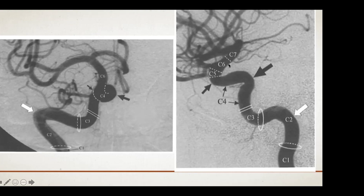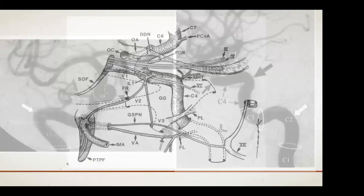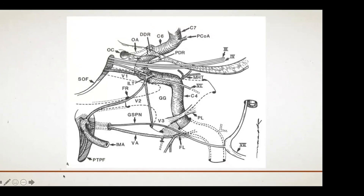Here you can see the PCOM coming off the ICA terminus, with the anterior cerebral artery and middle cerebral artery bifurcating. Another image shows the ICA segments in detail — the C4 cavernous segment with the meningo-hypophyseal trunk and inferolateral trunk, the clinoidal segment, the ophthalmic artery coursing through the optic canal, and the posterior communicating artery at C6 and C7.